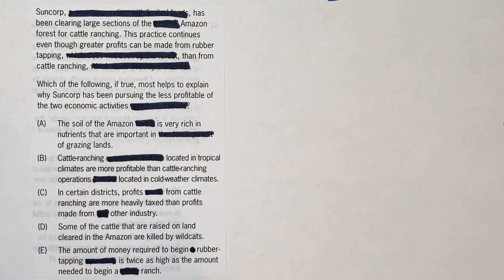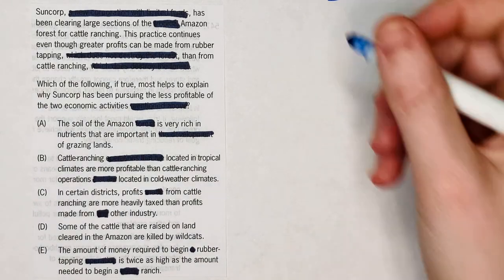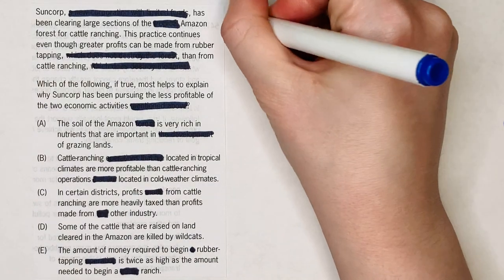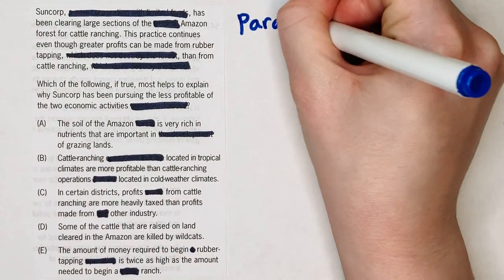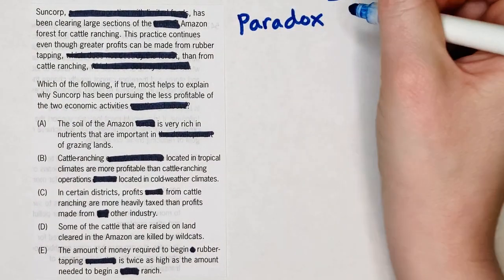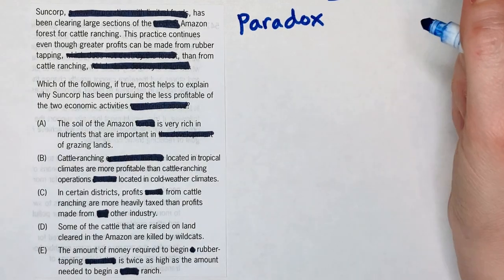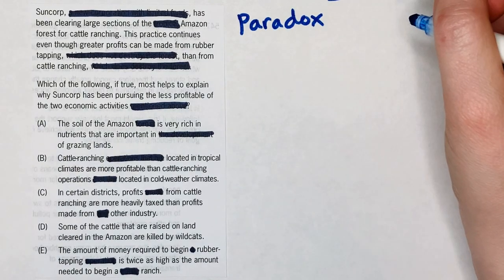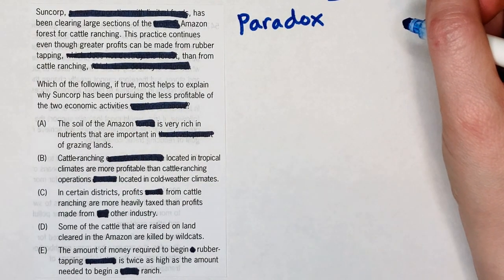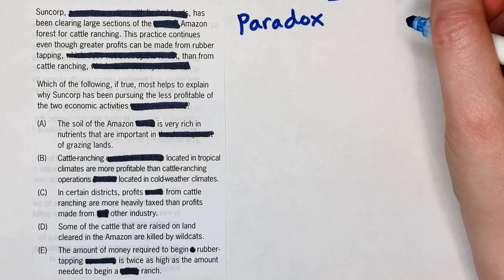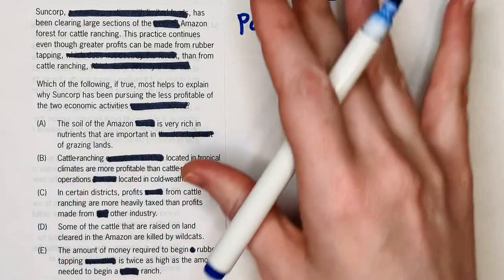Today we're going to look at a CR paradox question. I had to redact certain portions of it because of copyrights. Go ahead and look in the description box — you can click the link to the question on GMAT Club, read the full question stem, and come back when you're ready.